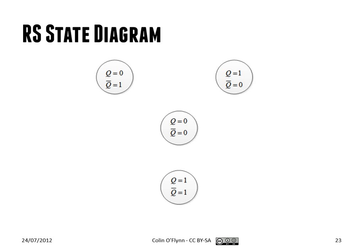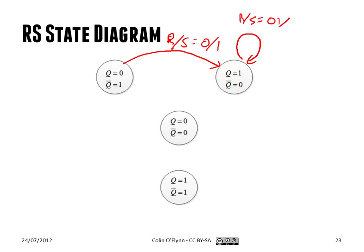You can do the same thing with an RS latch. You can start with the various states seen as the Q output — Q of zero or Q of one — and this is what we call set or reset. So if we're in the Q equal to zero state, the reset state, if RS is equal to zero slash one, set becomes set, we go to that state. If RS is equal to zero one again, we stay in it. Or if it's equal to zero zero, we also stay in that state.